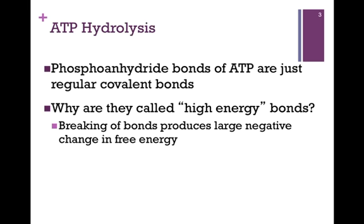The phosphoanhydride bonds of ATP are just regular covalent bonds. So why, then, do we sometimes refer to them as high-energy bonds? It's because when we break the bond, it produces a large favorable or negative change in free energy.